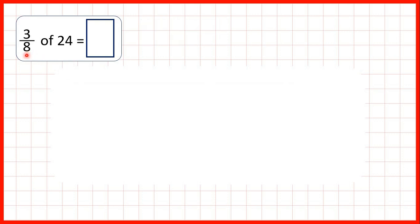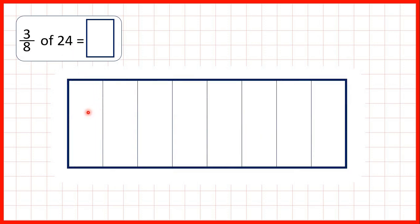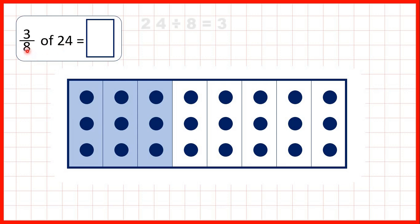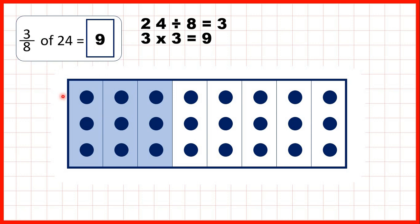Finally, we had to find 3 eighths of 24, so we can split our fraction bar into eighths, and we're finding 3 eighths. If we share out 24 counters, you can see that we have 3 counters in each of our eighths, and that's why we divided 24 by 8 to get 3. But we have 3 eighths, so we needed to multiply by 3 to get our answer of 9. You can see that we have a total of 9 counters in the shaded area of our fraction.